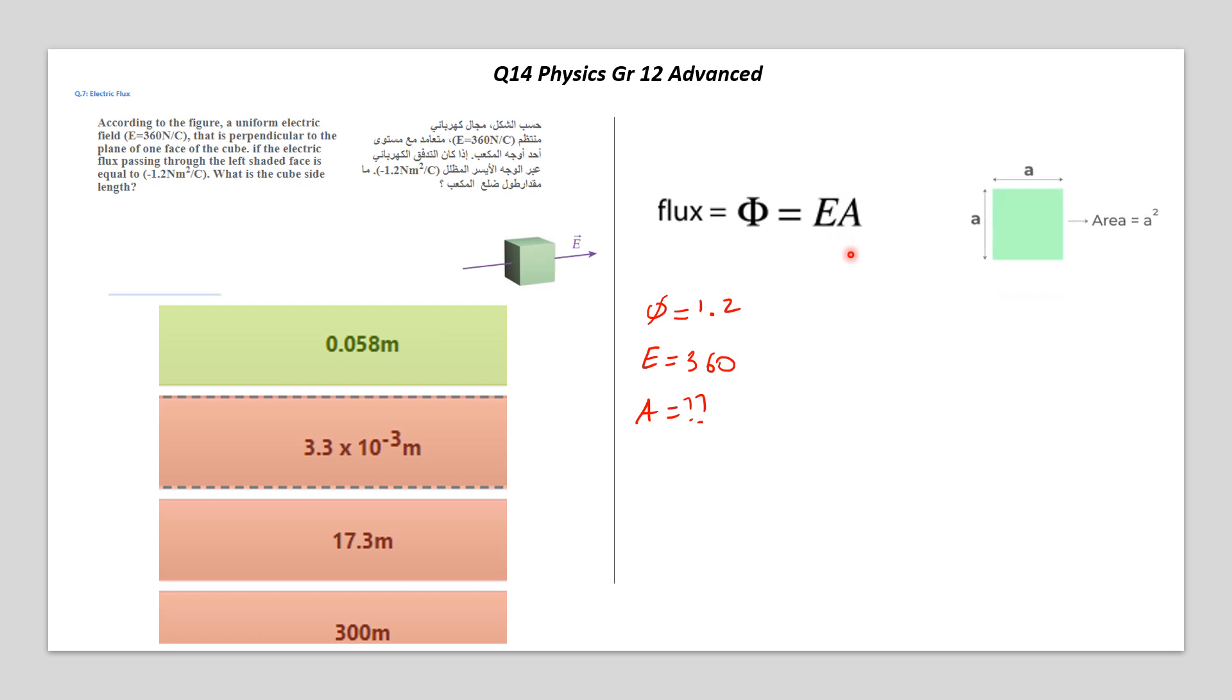Then, after finding out the area, we do the square root to find out the side of the square. As you know, the area equals side to the power of 2, in case of a square.